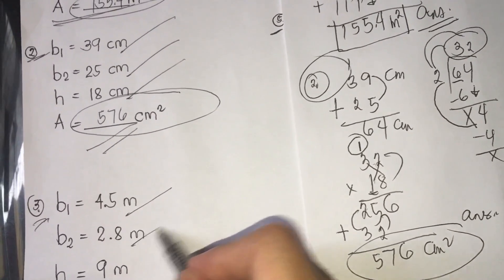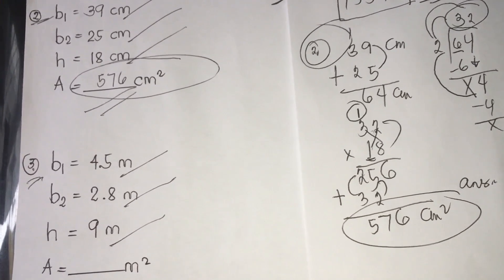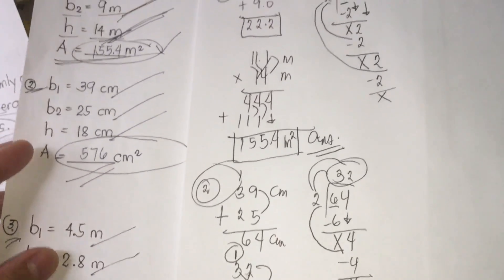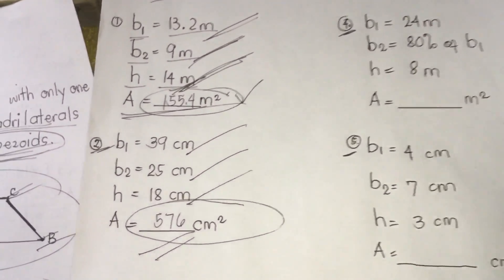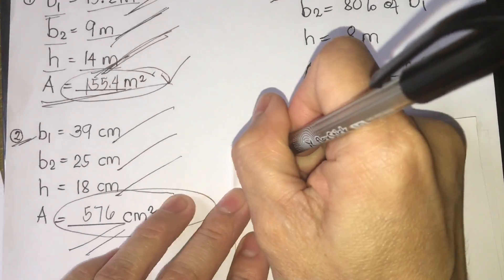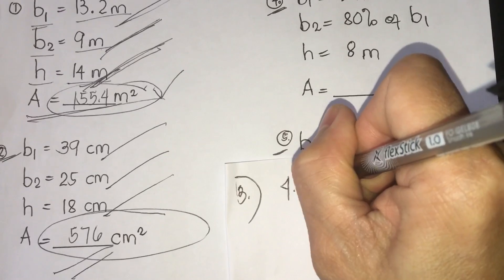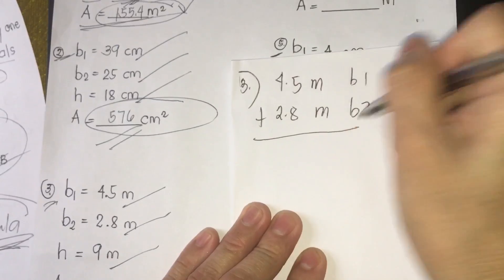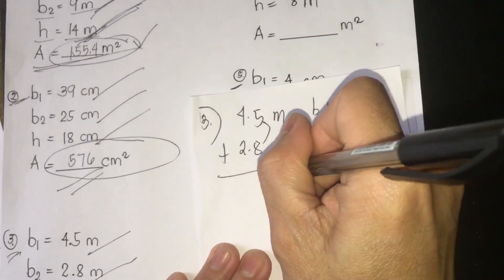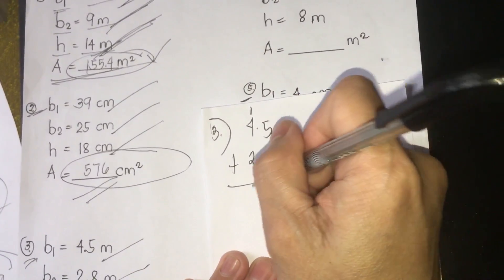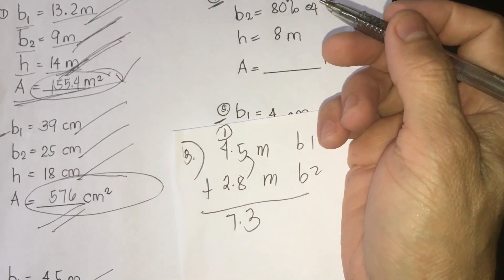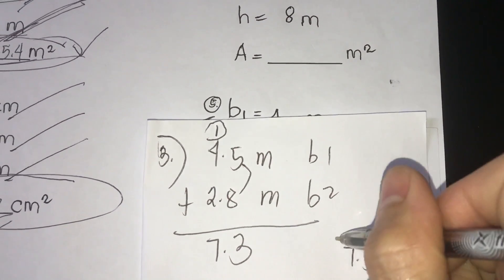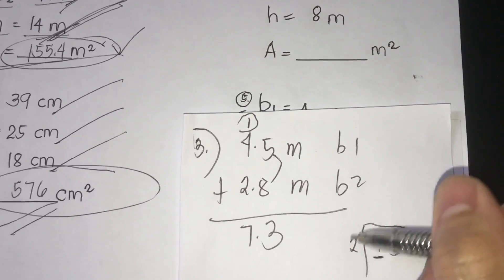Next, number three. The given is: b1 is 4.5 meters, b2 is 2.8 meters, and the height is 9 meters. For number three, we add b1 and b2: 4.5 plus 2.8. Five plus eight is 13, regroup 1; 4 plus 2 plus 1 is 7. So we get 7.3 meters. Next in the formula we divide by 2.